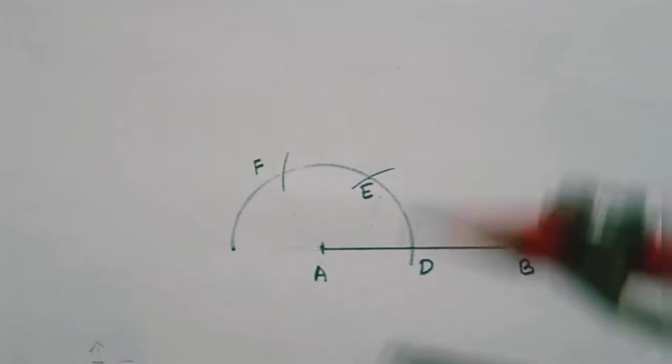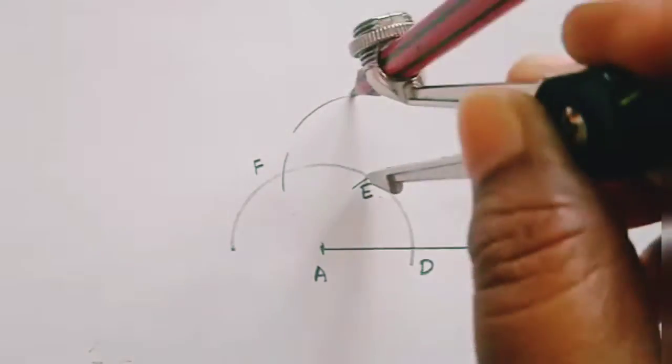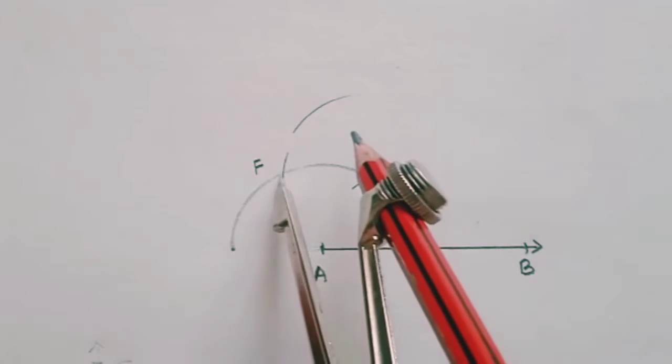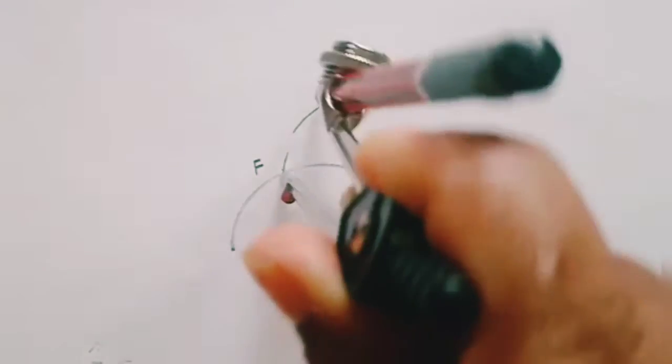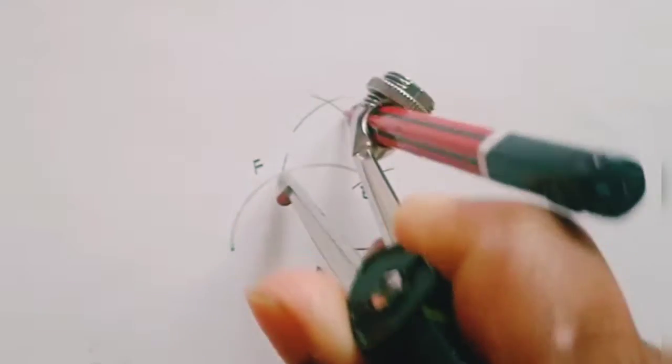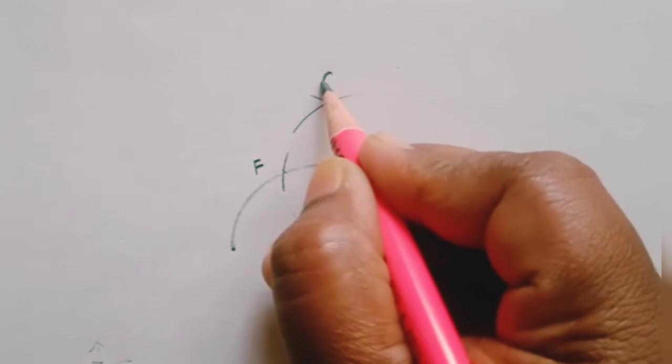Don't change the radii. With the same radii, with E as center draw an arc, and with F as center draw another arc. Let both the arcs meet at a point. Let it be G.